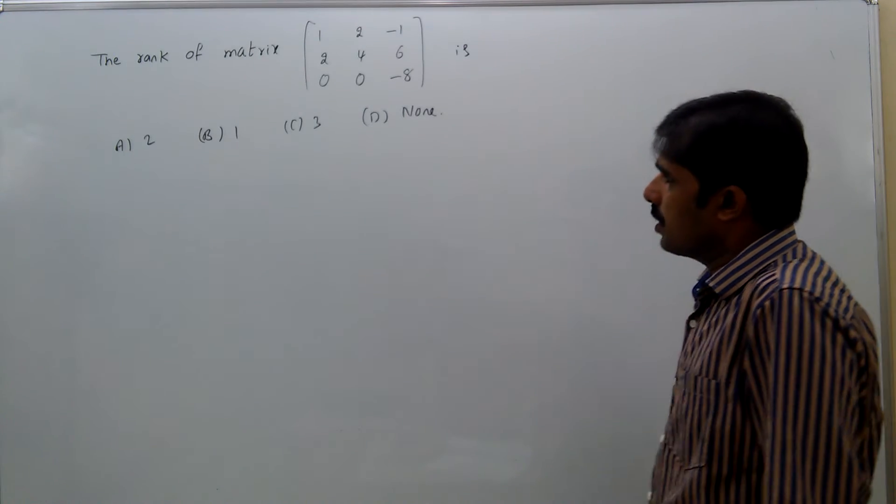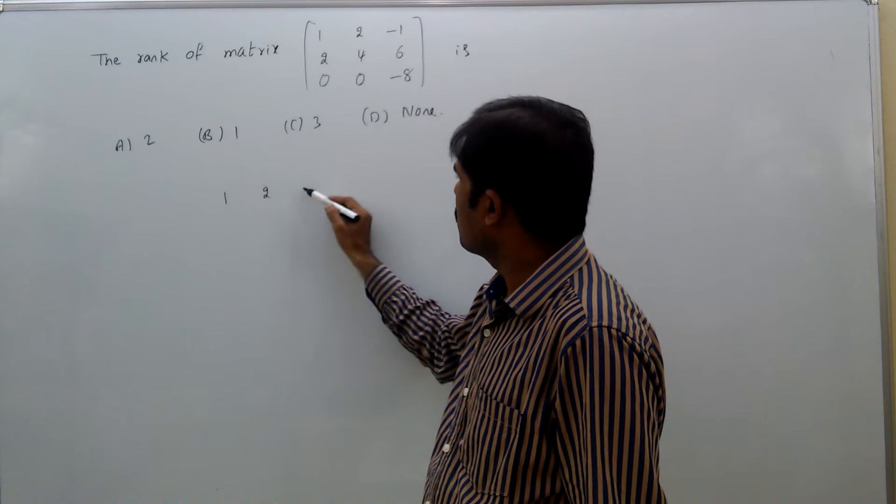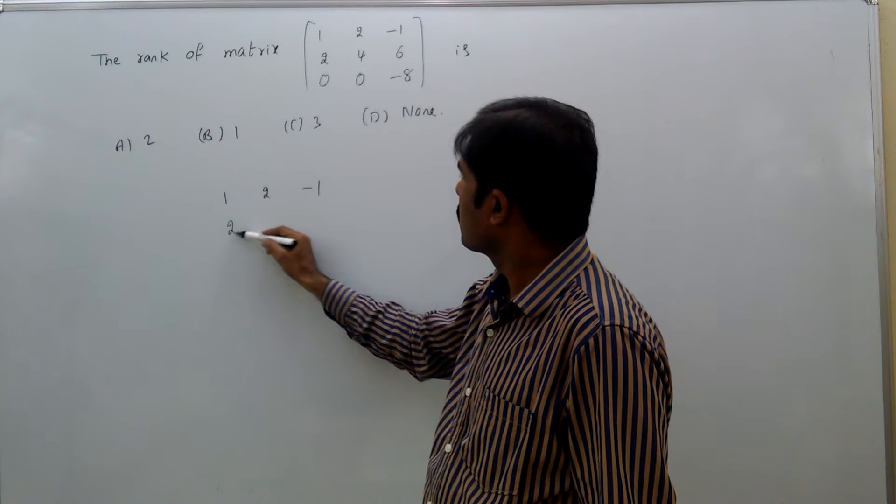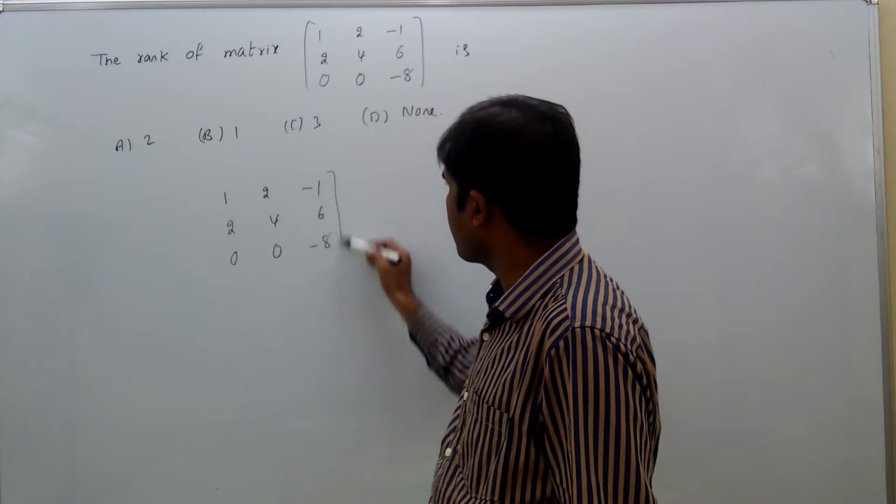Now, first we will do elementary row transformations. So, the matrix is [1, 2, -1; 2, 4, 6; 0, 0, -8].